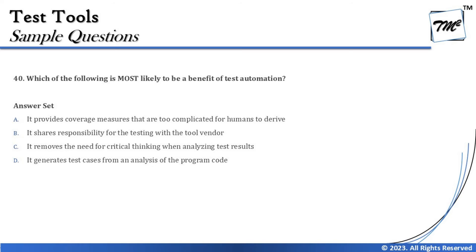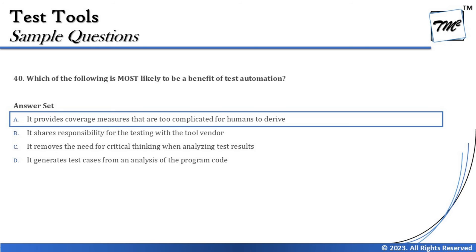Putting it all together, the final answer to question 40 is A — it provides coverage measures that are too complicated for humans to derive — which is one of the benefits we can have from test tools. That's all we have from set B. We'll be starting with set C in the next tutorial, so stay tuned. Feel free to comment below with any questions — I'm always there to address them. Till then, keep learning, keep exploring, keep understanding the context. Thanks for watching and happy learning.